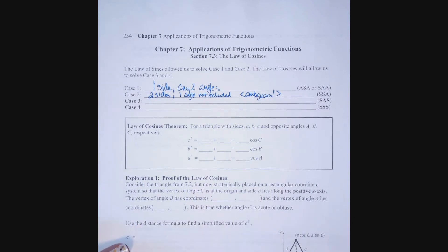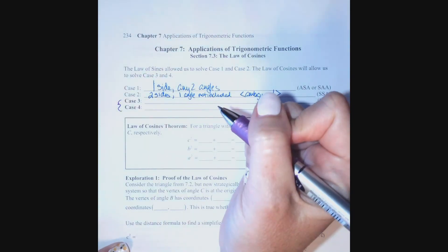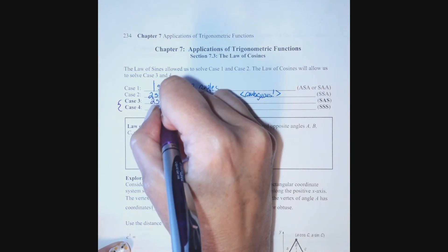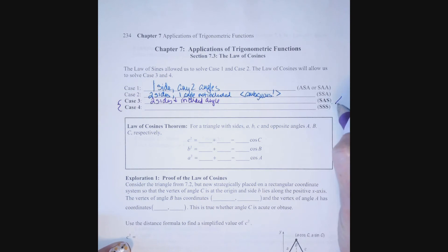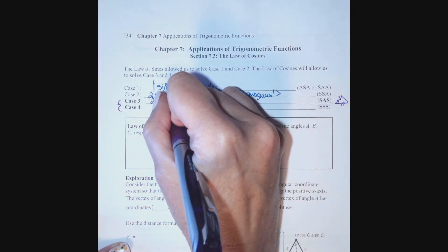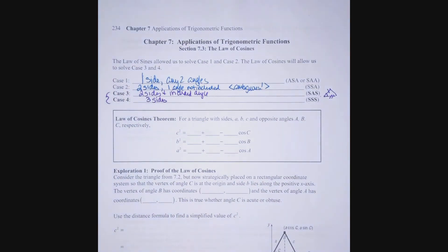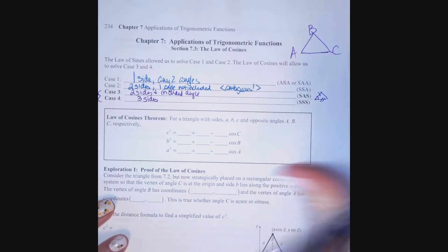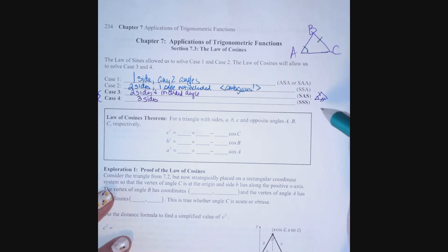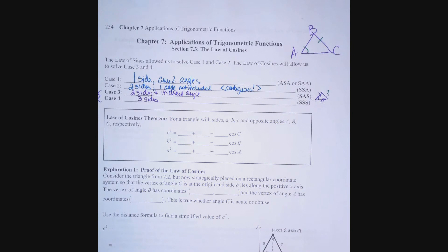In this section we're going to focus on cases 3 and 4 and learn about the Law of Cosines. Case 3 is when I know two sides and the included angle — side-angle-side. Case 4 is when I know all three sides but no angles. For these two cases we have to start with the Law of Cosines because we don't have a pair — an angle and its opposite side.